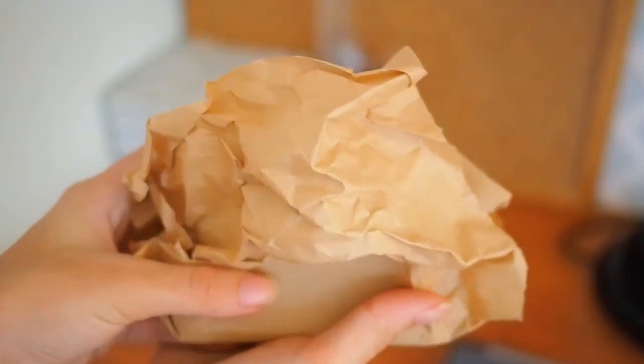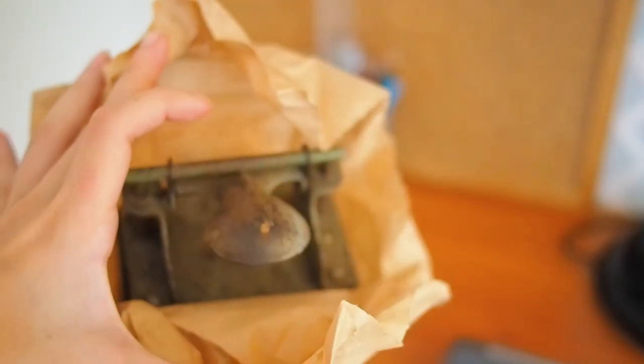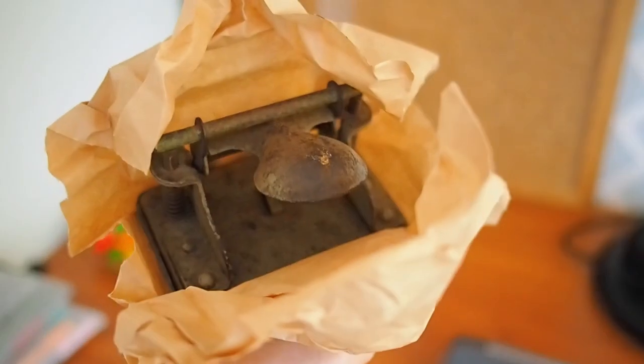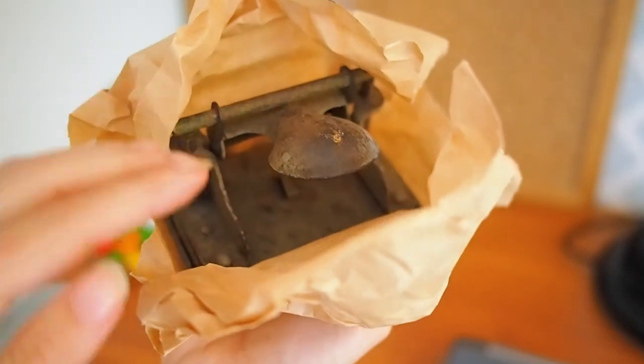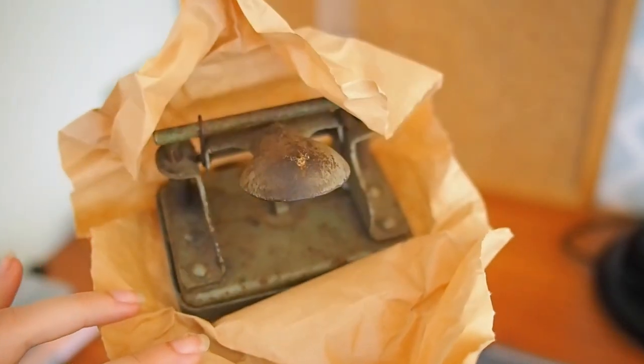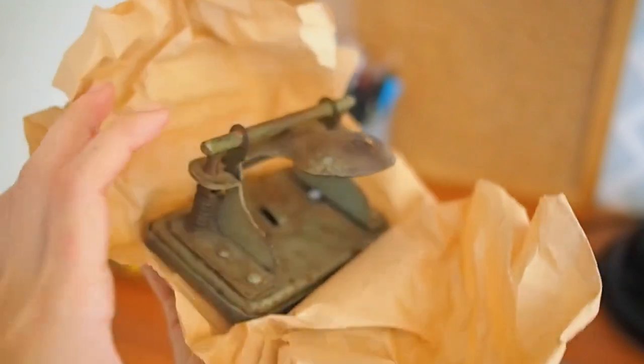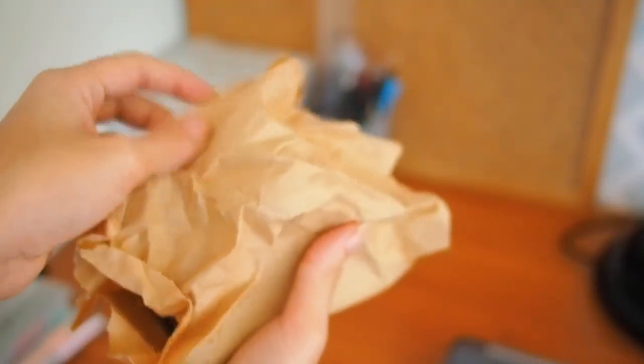I'm starting off in this little corner here, and the first thing I have is this very old and rusty hole puncher. I have it in this paper because it's rusty and it's not looking very good, so I prefer to keep it away inside this paper in order to make the desk look cleaner and a lot more beautiful.